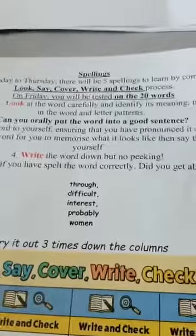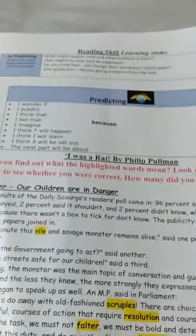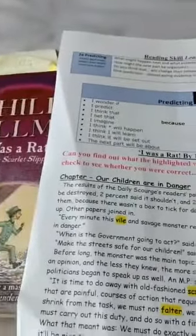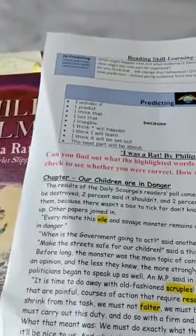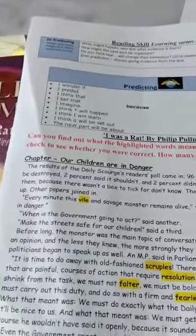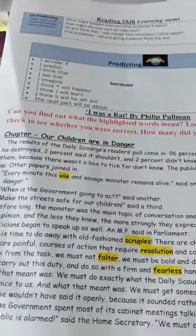After that, we're looking at our reading skills, which was from the story of 'I Was a Rat.' We're looking at the chapter 'Our Children Are in Danger.' So look at the highlighted words and answer some of the questions related to prediction.